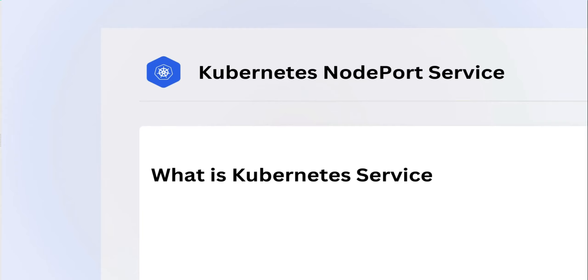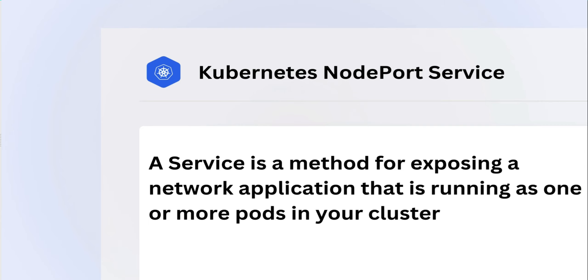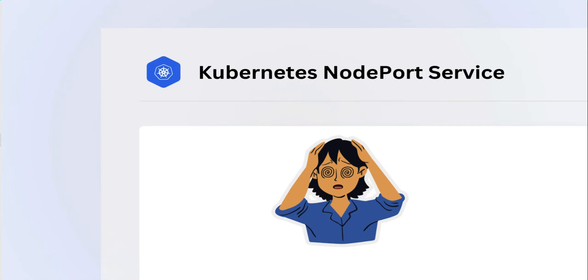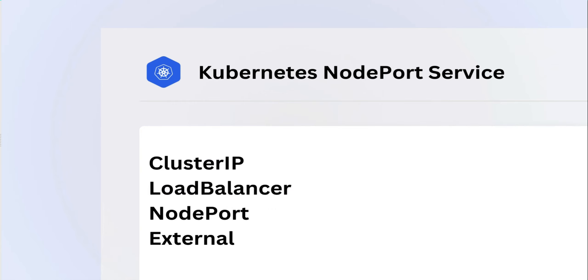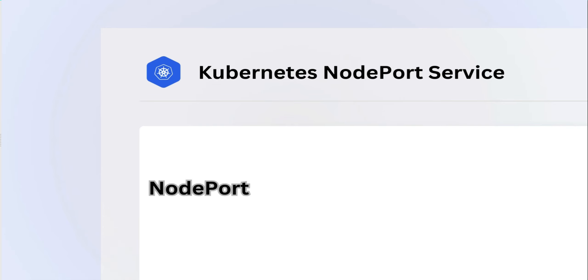Welcome back. In this video I will give you a complete overview of the Kubernetes NodePort service. A service is a method for exposing a network application that is running as one or more pods in your cluster. If we need to access an application running inside a pod from outside the Kubernetes cluster, or if applications within the cluster need to communicate, Kubernetes service is going to help. We have different types of services like ClusterIP, NodePort, ExternalDNS, and LoadBalancer, but in this video we are only going to cover the NodePort service.